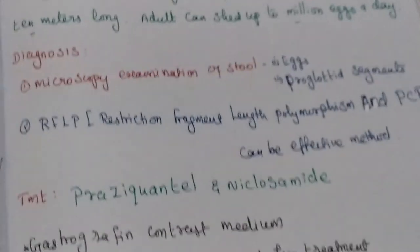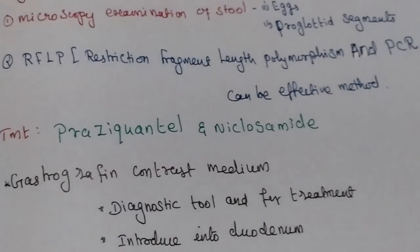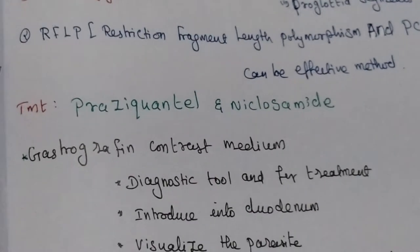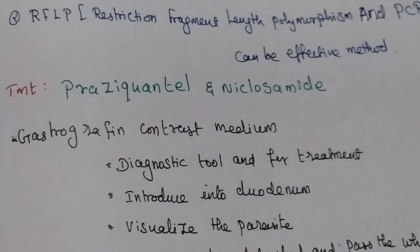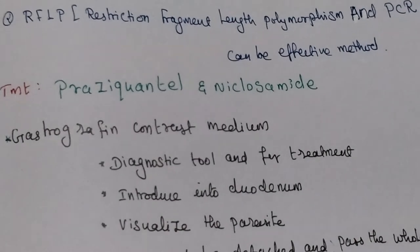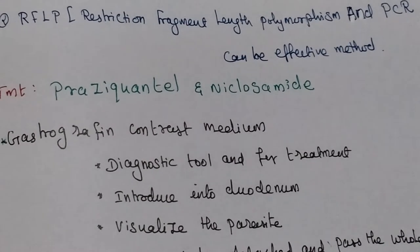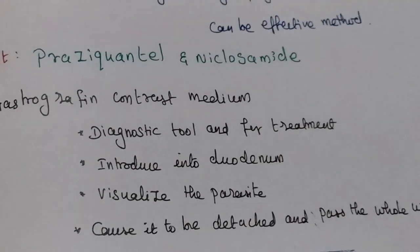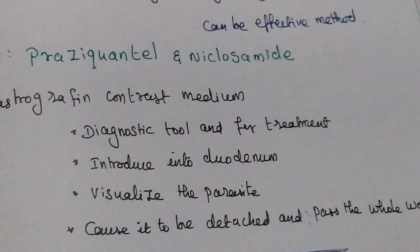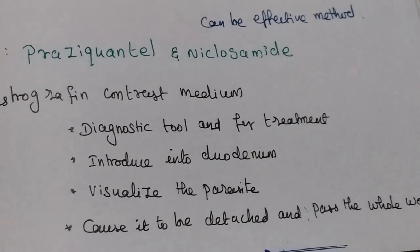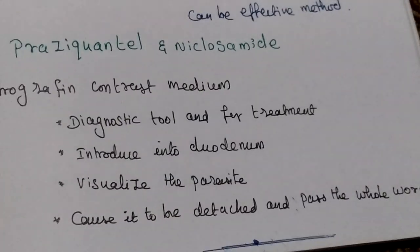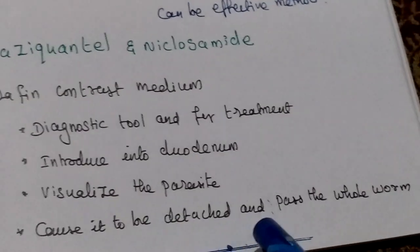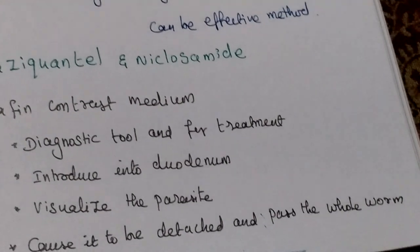Treatment includes praziquantel and niclosamide. Gastrografin contrast medium, used like an X-ray, is a diagnostic tool that is introduced into the duodenum to visualize the parasite, causing it to detach and pass the whole worm.